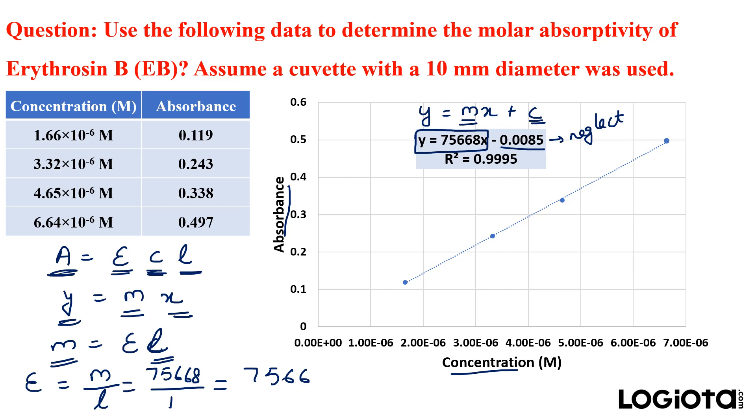Right. Now what are the units for this molar absorptivity? It is molar inverse centimeter inverse. So this is the answer 75668 per molar per centimeter.